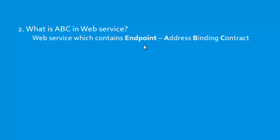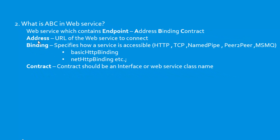A web service endpoint contains address, binding, and contract. Address means the URL of the web service to connect. Binding specifies how a web service is accessible — through HTTP protocol, TCP protocol, named pipeline, MSMQ, and different protocols. Generally the bindings are specified as basic HTTP binding, net HTTP binding, or net TCP binding, etc. Contract means the contract should be an interface or web service class name.